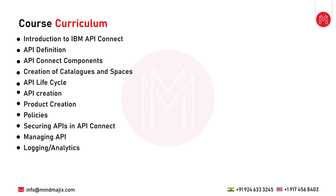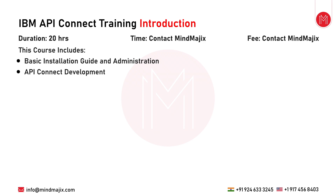A key component of IBM API Connect is DataPower, another IBM product. DataPower acts as the runtime for IBM API Connect — whatever you configure in API Connect is stored and executed in DataPower. To install IBM API Connect, you need at least a DataPower runtime. This course will be completed in 20 hours covering development, installation from on-premises to cloud flavors and Docker.